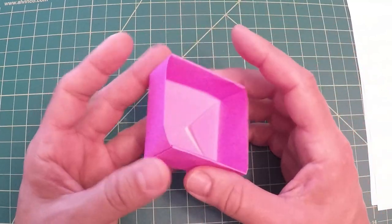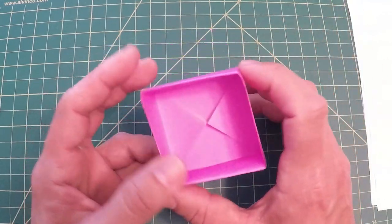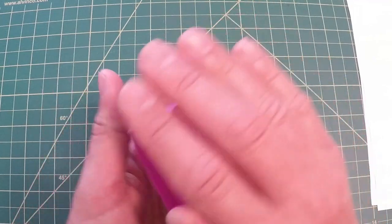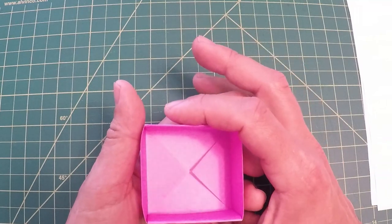The top half, which is the lid, is pretty much almost the exact same fold, except you have to make a few adjustments so that way the lid is a little bit bigger because it needs to be bigger so it can slide right over it.